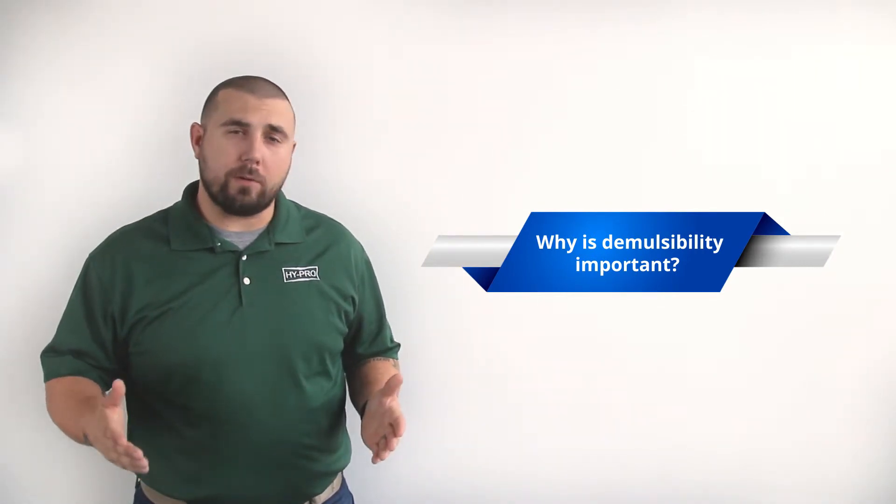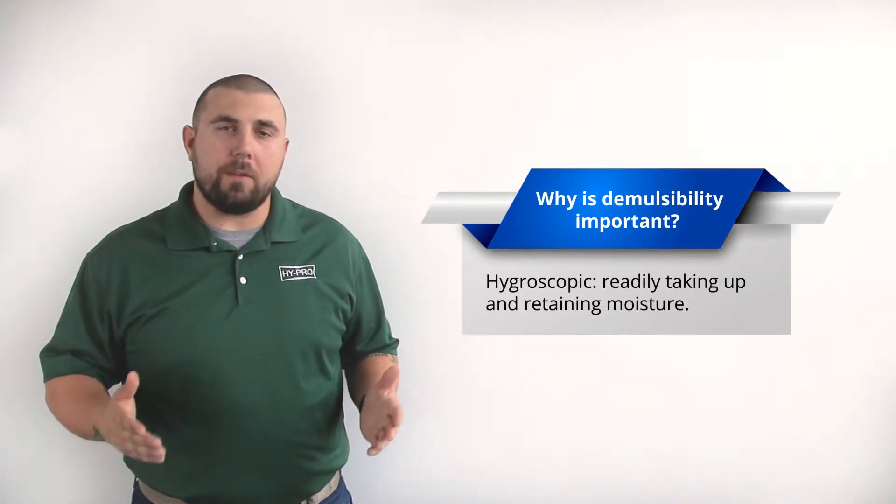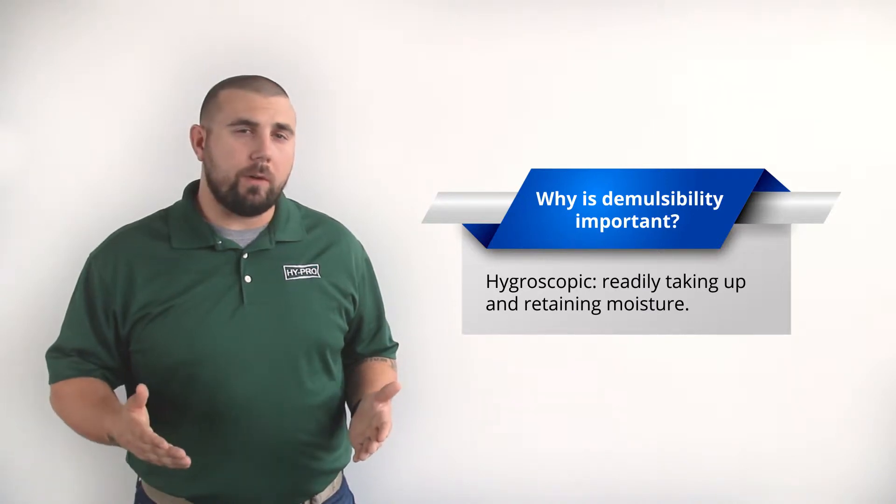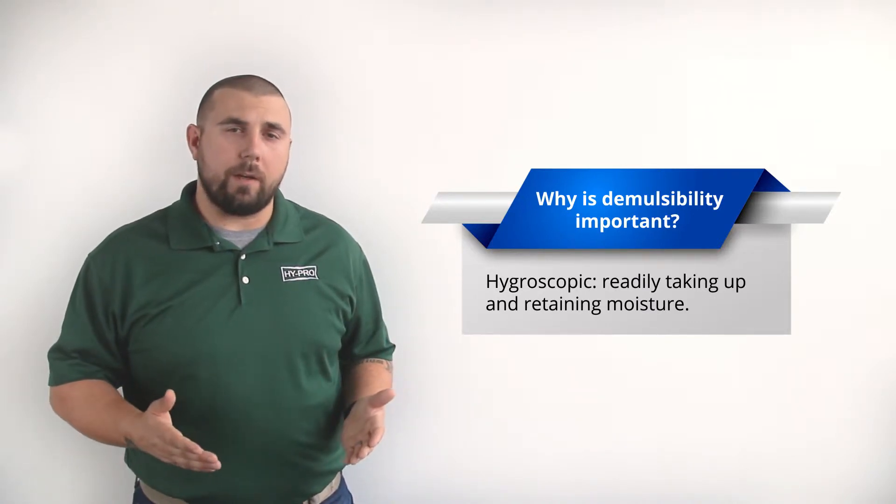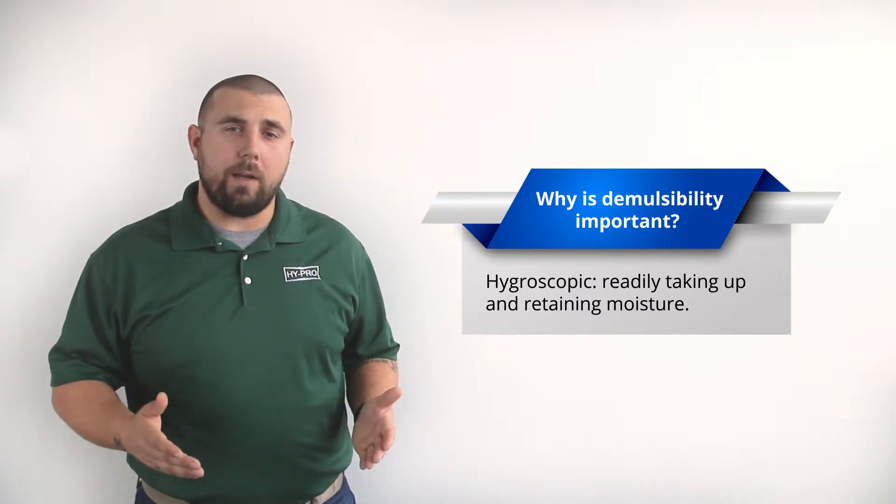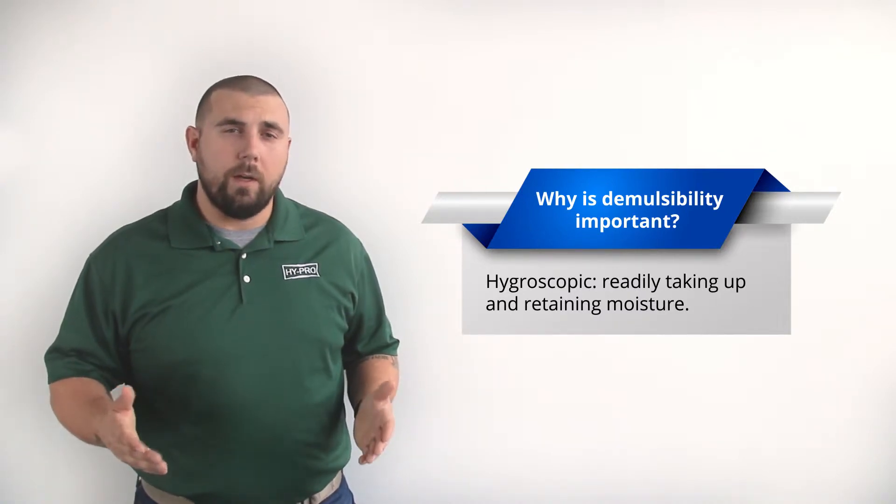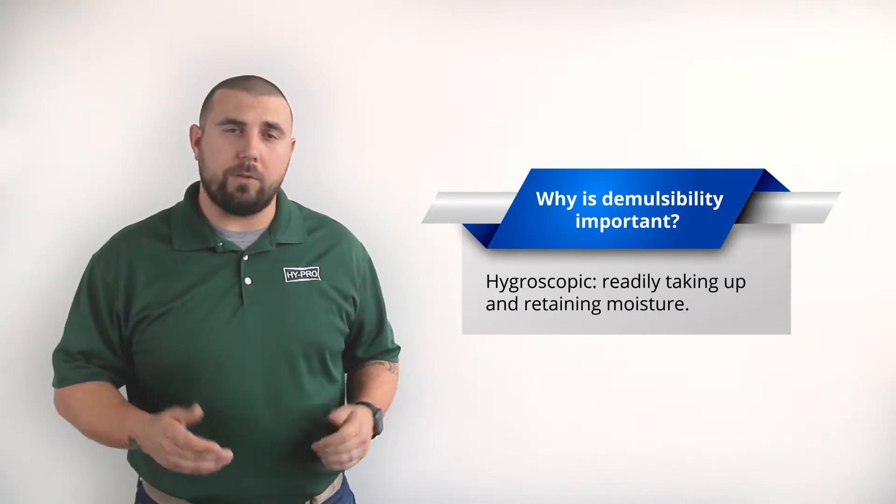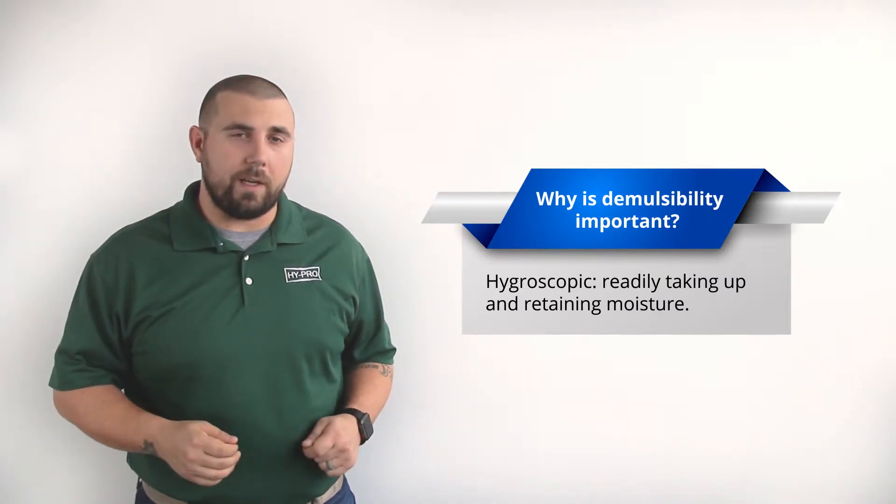However, it can also be hygroscopic, meaning that turbine oil also has the ability to naturally attract and hold water. Because turbine oil is both demulcible and hygroscopic, it has a delicate relationship with water. Some amount of water is okay and to be expected in turbine oil. This water is held in the oil much like humidity is in the air. It's called dissolved water and it's not visible to the eye.